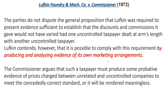The commissioner argues that the taxpayer must produce some probative evidence of unrelated and uncontrolled companies. So the commission says you have to have third parties dealing with each other. Is this a question of taxpayer-to-arm's-length-transaction third party, with the treasury saying no, you have to look at two third parties dealing with each other?